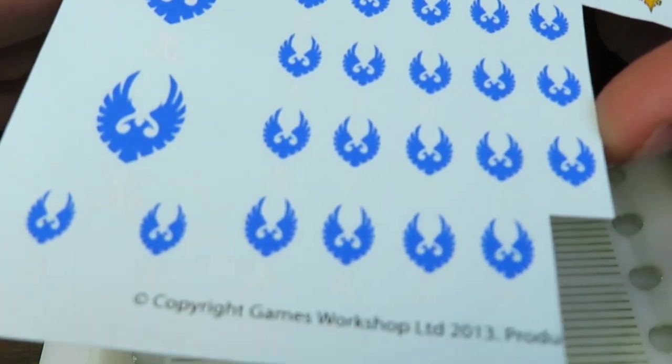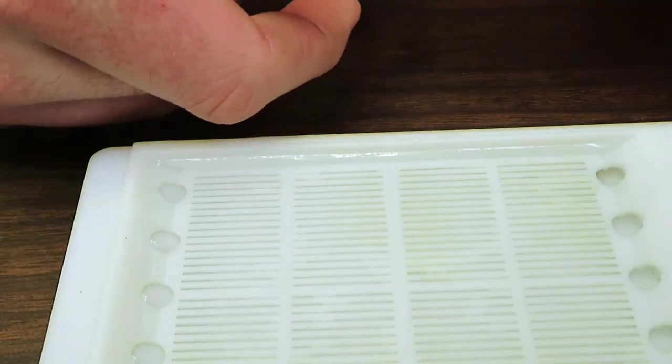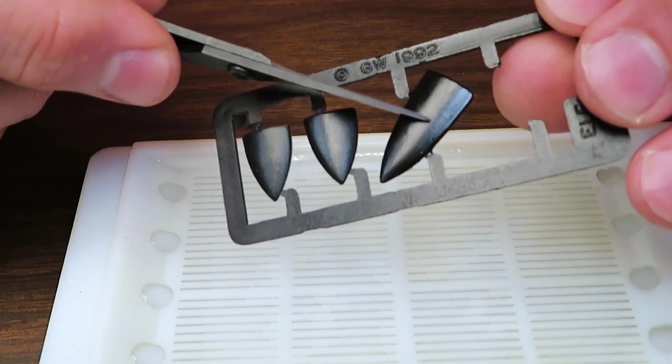Now we're going to cut out our decal for our shield. First off you want to think about placement. It's a shield. It's pretty easy. It's going right in the middle.